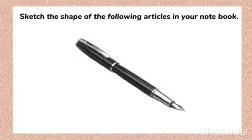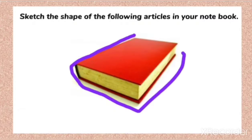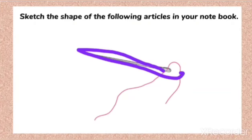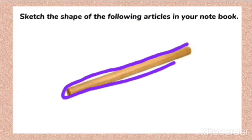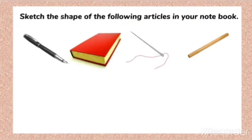Similarly we can do with a book — we could sketch the shape of that article, and we can also try with a needle. There also we could sketch it. When we take the stick as well, it is possible to make the sketch. So we could sketch the shape of these articles — we have tried with the pen, book, needle, and even with a stick.